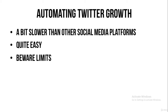Another thing: you have to be aware of the limits of Twitter. They also have following and unfollowing limits, so we don't want to cross those limits and get our account banned. So those are the three things to know about automating Twitter growth: it's a bit slower, it's quite easy, and we have to be aware of the limits.